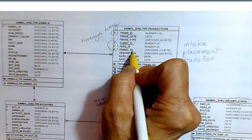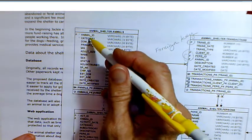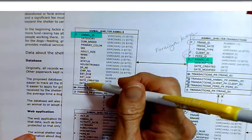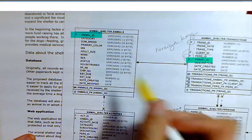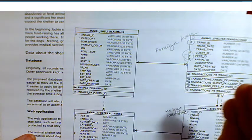Animal ID is a foreign key which links over here to the animal table. And the animal table has all the attributes or the columns in the table that help us describe that animal, such as category: it's a dog, it's a cat.